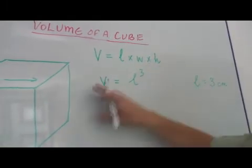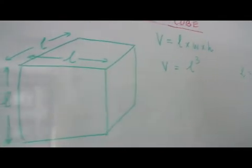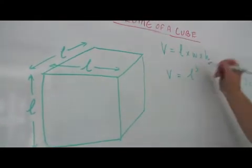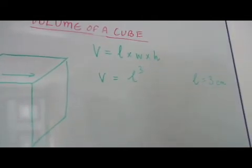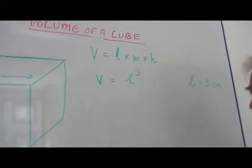But in the case of a cube, we know that all of these are the same. So in fact, this is L times L times L, or L cubed. We only have one real dimension. So the calculation is very straightforward.